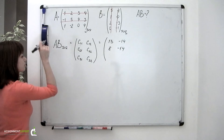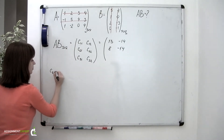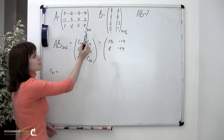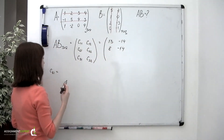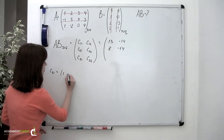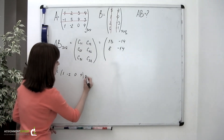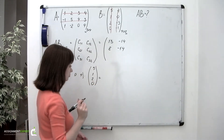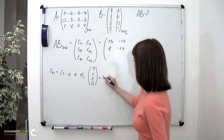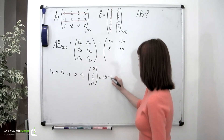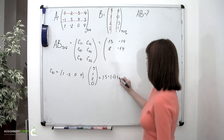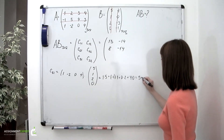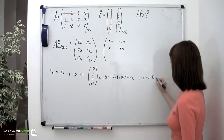And here goes the last row. C sub 3,1 is found by multiplying the elements of the third row of the first matrix by the elements of the first column of the second matrix. So we have 1, negative 2, 0, and 4, multiplied by the column 5, 1, 2, and 0, which equals 1 times 5, plus negative 2 times 1, plus 0 times 2, plus 4 times 0 — that is 5 minus 2 plus 0 plus 0, which is equal to 3.